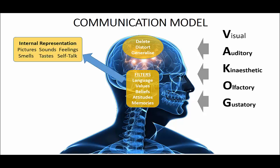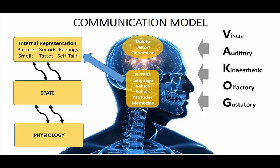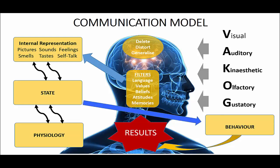So these are our filters. The information, once filtered, creates our internal representations — these can be pictures, sounds, feelings, smells, and tastes, even self-talk. The internal representation has an impact on our state, and our state has an impact on our physiology. Our state then has a huge impact on our behaviour, and behaviour obviously on our results. You can see how this plays out with sportsmen and women in terms of their ability to maintain a good state, get the behaviours they want, and lead to the desired results.